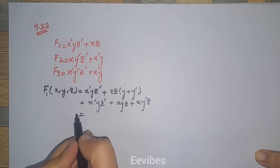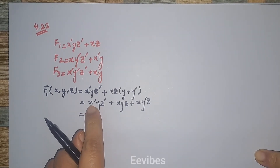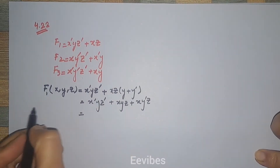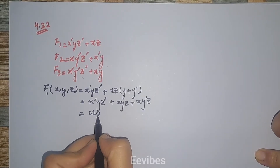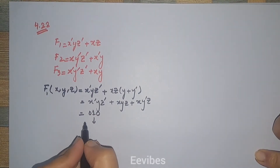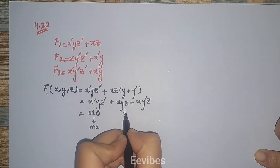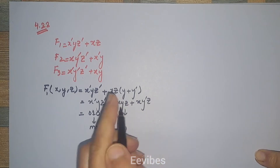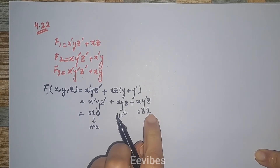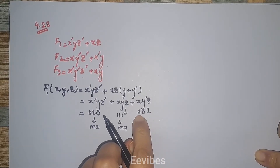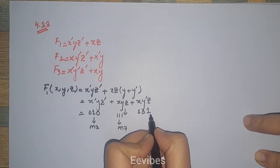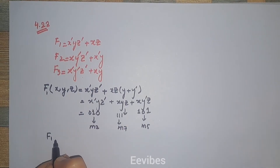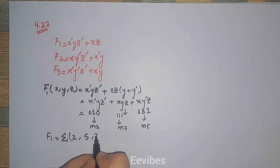In minterm representation, complemented variables correspond to 0 while unprimed variables correspond to 1. So x-complement·y·z-complement is 0-1-0, which corresponds to m2. All variables unprimed in x·y·z gives 1-1-1, corresponding to m7. The term x·y-complement·z gives 1-1-0, and 4+1 corresponds to m5. Therefore F1 can be represented as the summation of minterms 2, 5, and 7.